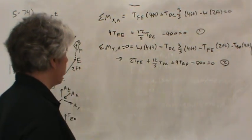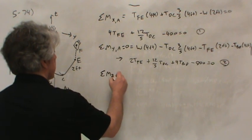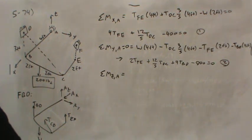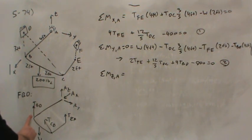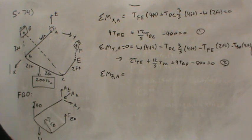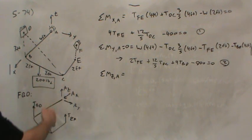So my last equation will be to sum moments about the Z axis at A, and hopefully this will all work out. Well, about the Z axis. Notice that BD, EF, and W are all Z direction forces, so they can't provide a moment about the Z axis. Only a component of CD can. Notice that the Z component of CD cannot, but the Y component can.